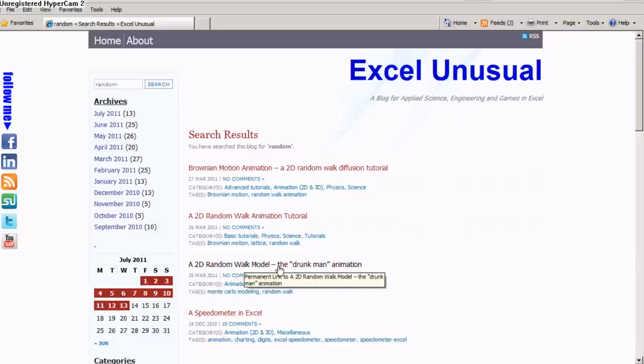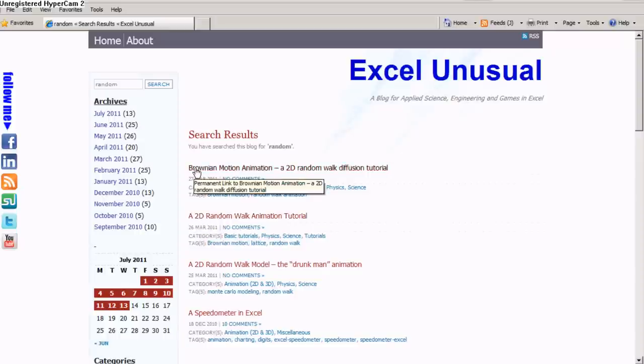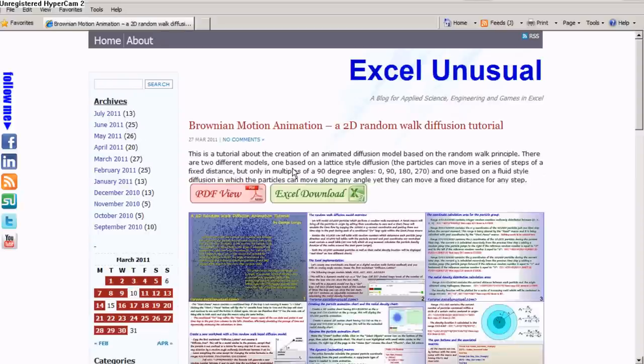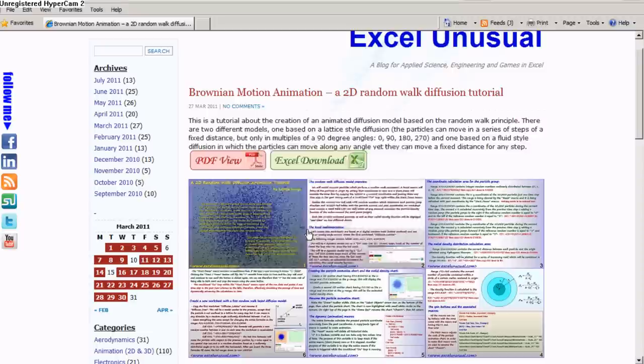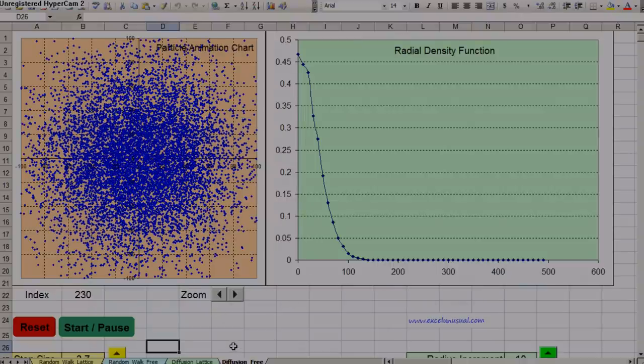One is a random walk model, the other one is a tutorial to this model, and the last one contains also Brownian motion animation, which is the diffusion model. You can click on this one, come here, read the tutorial, and then you can view the PDF full tutorial or you can download it from here. I'm not gonna open because I already have it open, but it's all free, it's here. Thanks for watching.